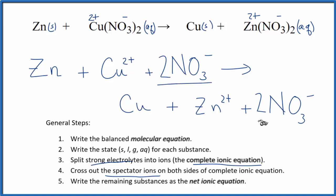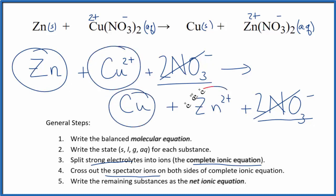But we have two nitrates on both sides - those we cross out. We're left with Zn plus Cu²⁺ yields Cu plus Zn²⁺. That's the net ionic equation.